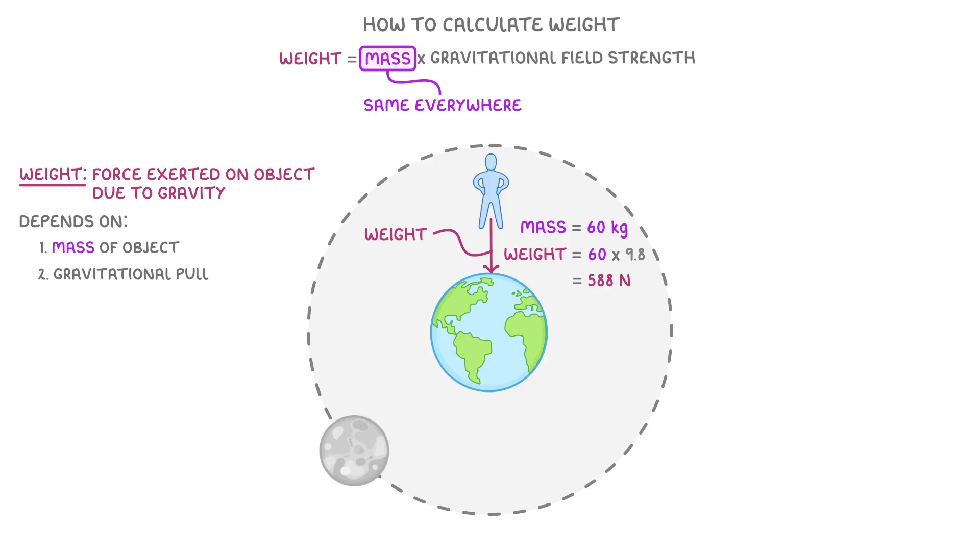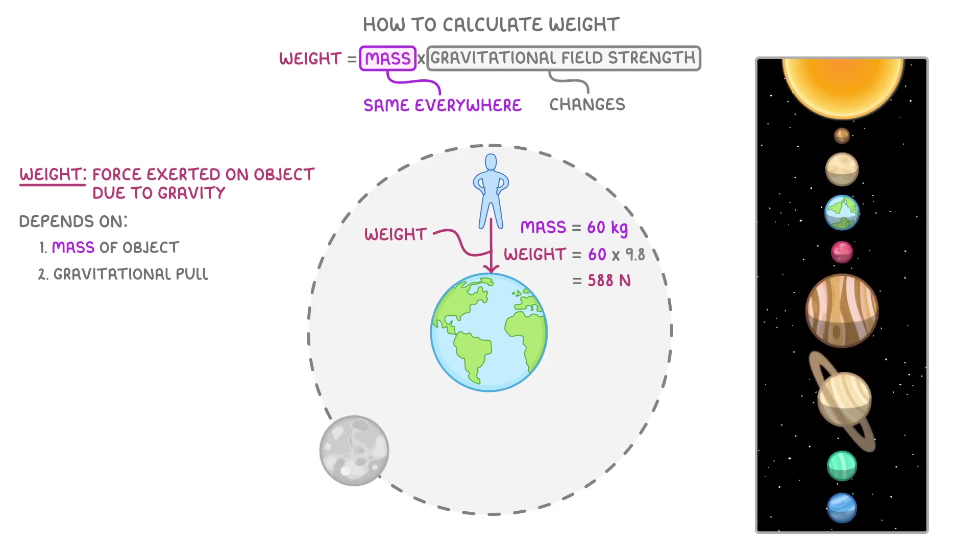Importantly, an object's mass is the same everywhere, but because gravitational field strength changes depending on which planet or star it's on, its weight changes depending on where it is.